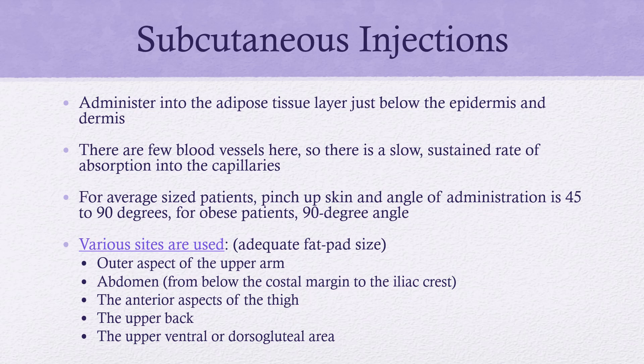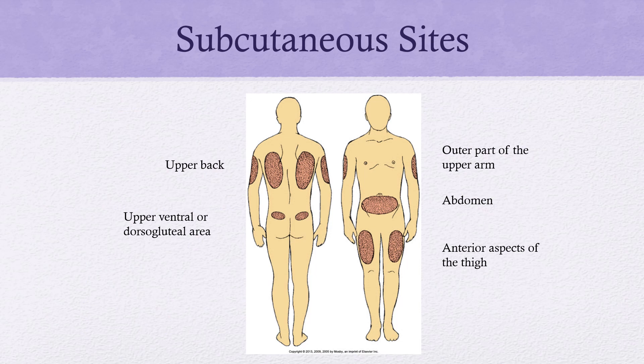Subcutaneous injections will be pretty familiar once you start giving them — this is how we give insulin. We administer into the adipose tissue, which is just below the epidermis and the dermis. There are many sites for subcutaneous injections, and with all of them we're looking for that collection of fat tissue. The upper thigh, back of the arm, and abdomen all have an increased amount of adipose tissue, which helps prevent accidentally getting into the muscle.